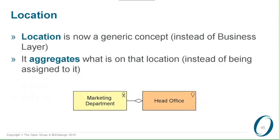There are some smaller changes as well. Location used to be in the business layer, which was a bit strange because location is used across the entire structure of ArchiMate across all three layers. We've moved it to a different position in the set of concepts. For the user that doesn't make much difference, but for people implementing the standard it might. We've also changed the relationship between location and what's on that location — it used to be assignment, but aggregation is a much more natural way of expressing this, so location now aggregates what's on that location.